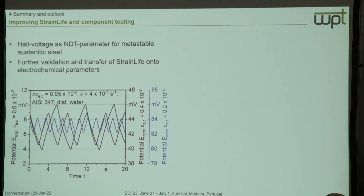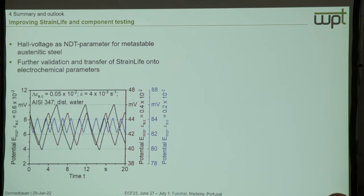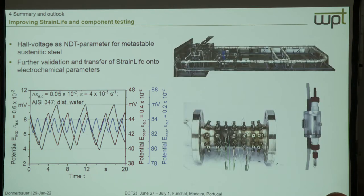To summarize: I showed the Hall voltage parameter and how we can use it to do a short-time evaluation procedure. We would like to transfer the strain-life method onto more NDT parameters, because different parameters may be sensitive to different microstructural changes. The amplitude of those signals moves well along with the mechanical loading of the specimen, and this might be better suited to do fatigue life calculation because we do not have the drift seen in earlier plots.